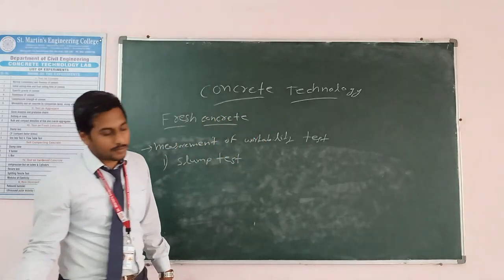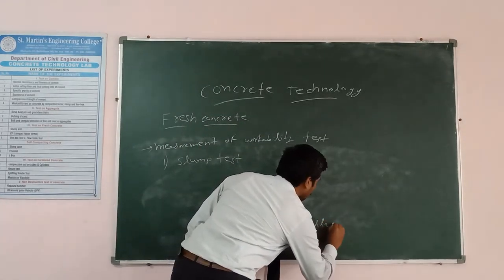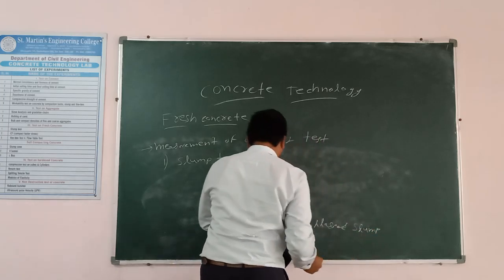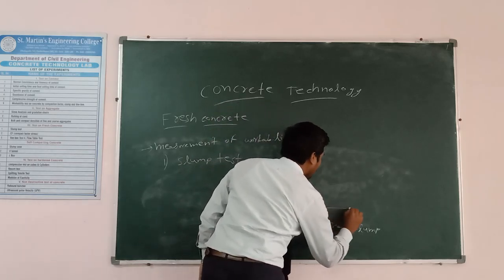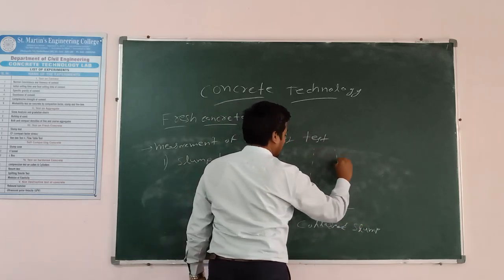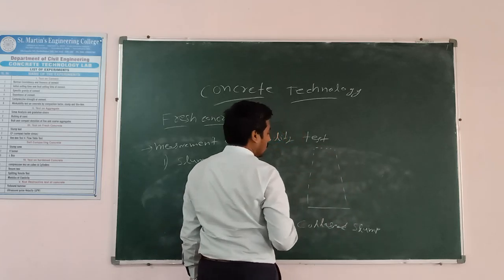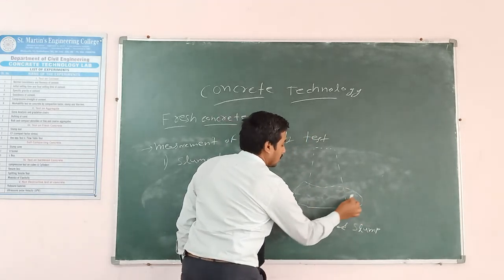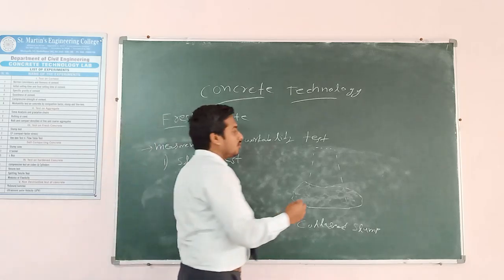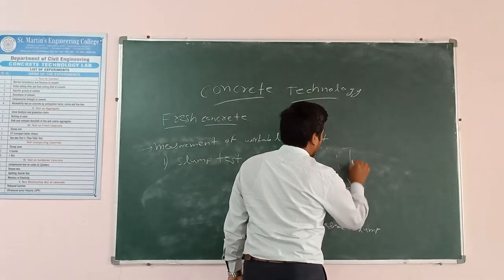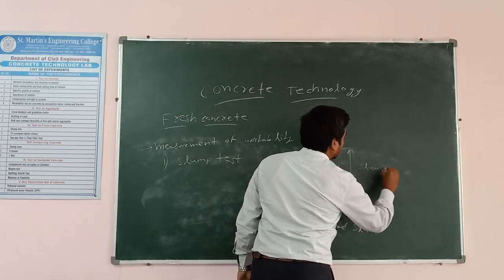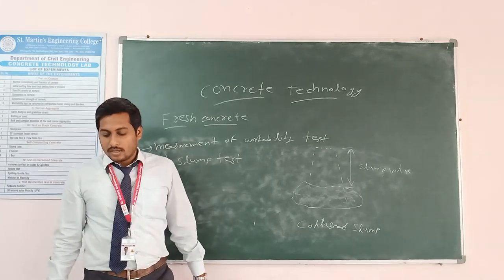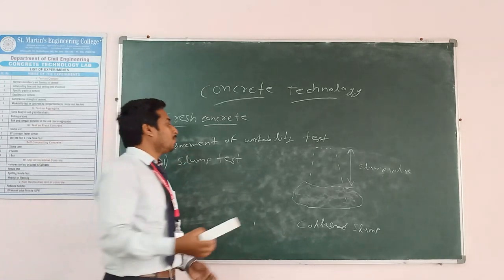The third type is collapse slump. After removing the cone, the concrete completely collapses. We calculate this measurement as the slump value.